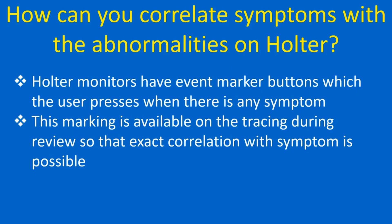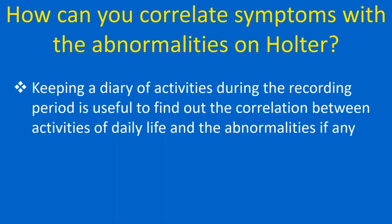How can you correlate symptoms with the abnormalities on Holter? Holter monitors have marker buttons which the user presses when there is any symptom. This marking is available on the tracing during review so that exact correlation with symptoms is possible. Keeping a diary of activities during the recording period is also useful to find correlation between daily life activities and any abnormalities.